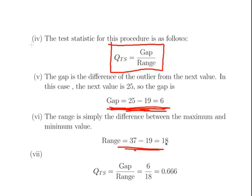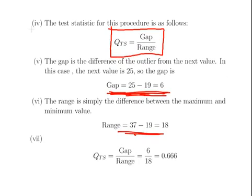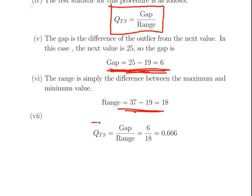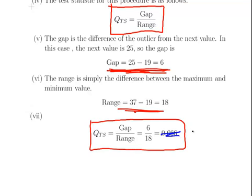It is 37 minus 19 over 18. So it is a straightforward enough calculation. The test statistic is the gap divided by the range. Here it is nice, sort of nice round numbers. 6 divided by 18, that is not right, 0.333. Sorry, that is an example from a different, so it is 0.333, 1 third essentially.